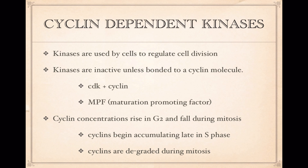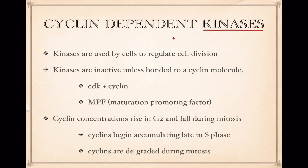There are such things as cyclin-dependent kinases, which are the signal molecules used to regulate the cell cycle or cell division. You probably remember the word kinase from the chapter on cell signaling. Cyclin may be new, but the spelling tells you a little about what they do. These are a group of protein kinases that are inactive unless they're bonded to another molecule called a cyclin.